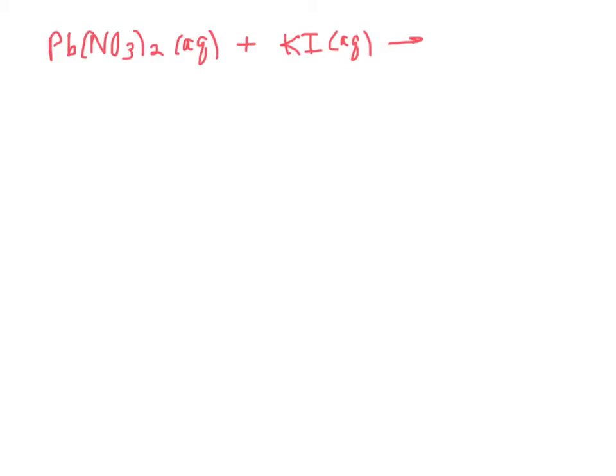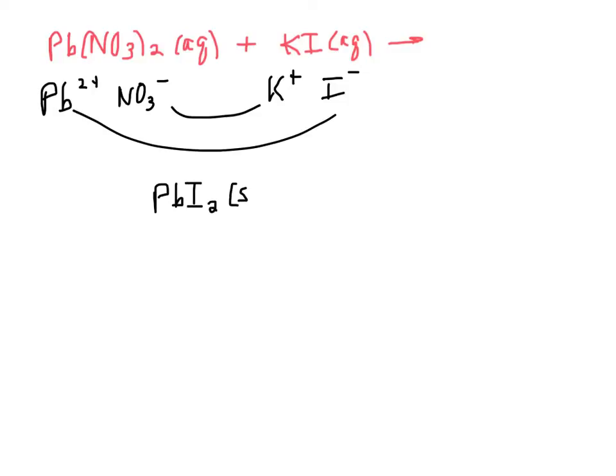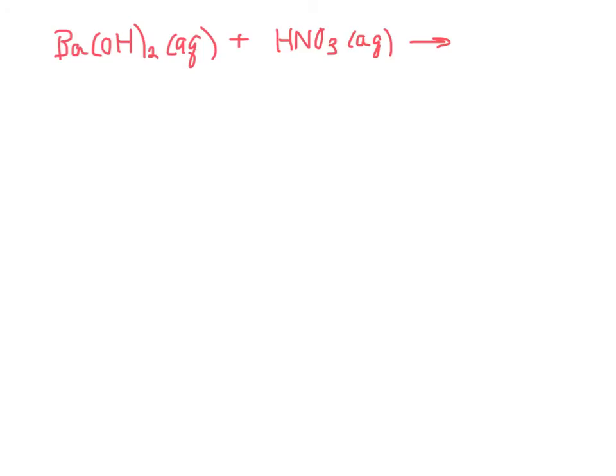So try another one. Pb2+, NO3-, K+, I-. Inside two, outside two. So the outside two make PbI2, which, if you check your solubility rules, is a precipitate. And the inside two make KNO3. Super solubility rules, all alkaline metals are soluble, all nitrates are soluble. This is aqueous. So we're all done, except the balancing. So we do need to go through and balance the equation. If you're getting the hang of it, you might want to try this one by yourself, but it's a teeny bit different.